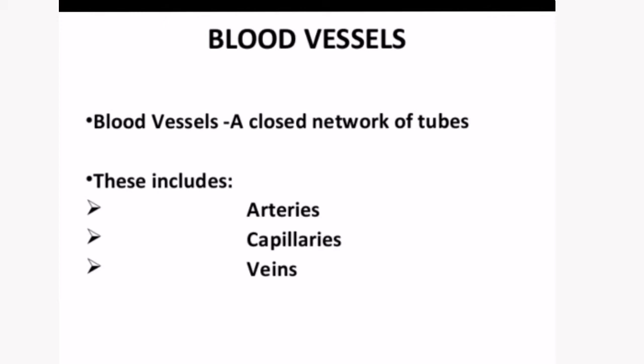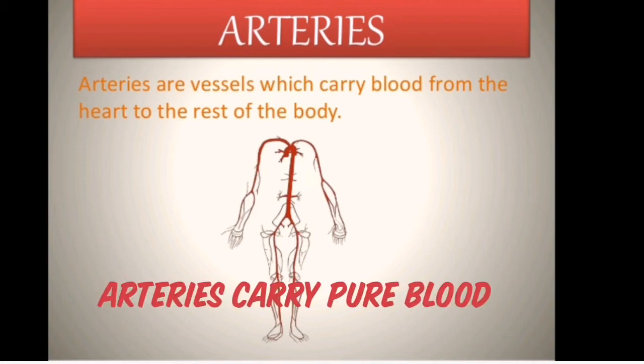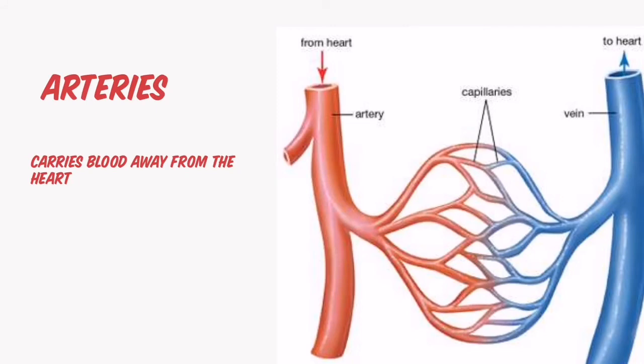Arteries — you can see in the image the red colored ones are the arteries. Why are they red in color? Because they carry pure blood. The blood that you see is red in color, that is pure blood. Arteries also contain oxygen and nutrients absorbed from the digestive system. The function of arteries is to carry blood away from the heart to all the parts of the body.